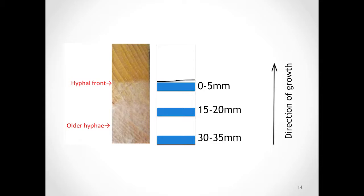We will call our hyphal front line zero and from there measure down to come up with five areas that we will sample for downstream analyses. We will sample from zero to five millimeters, 15 to 20 millimeters, and 30 to 35 millimeters — the latter areas being representative of mid-stage and later-stage decay respectively. This is the exact methodology used in Schilling's transcriptome study.